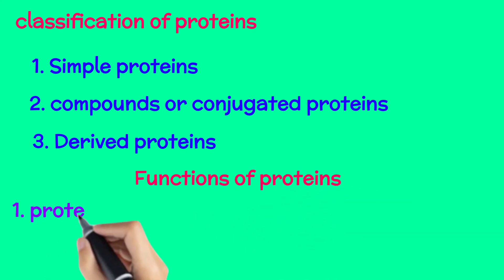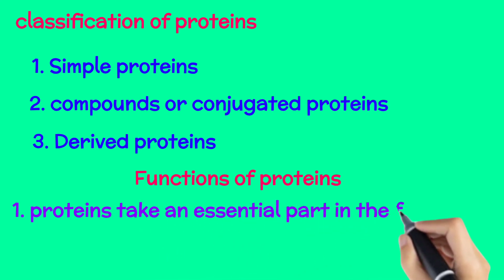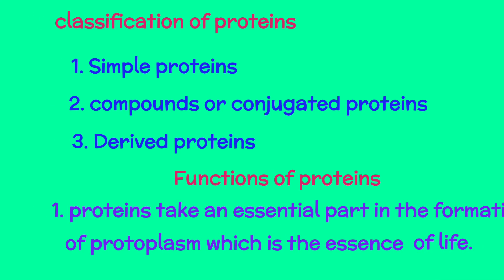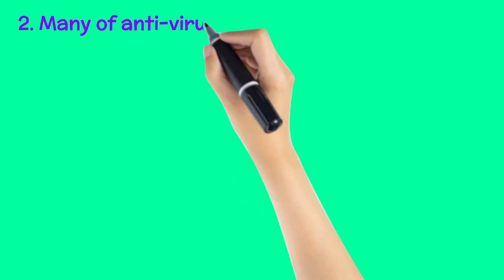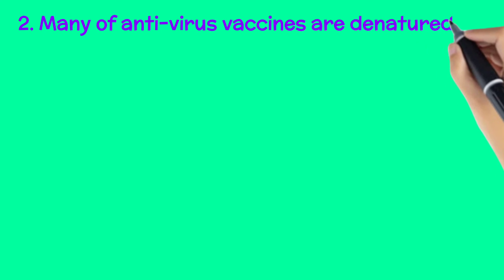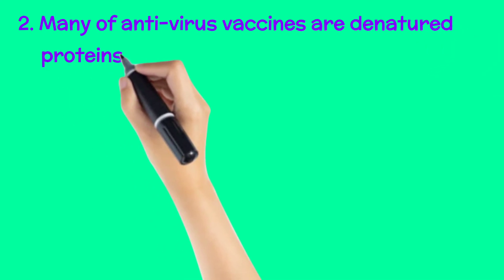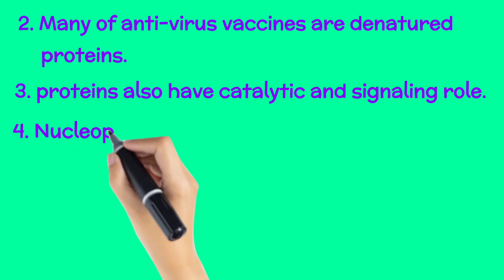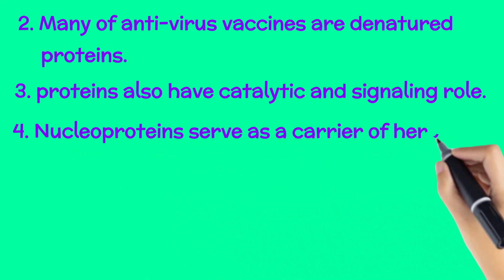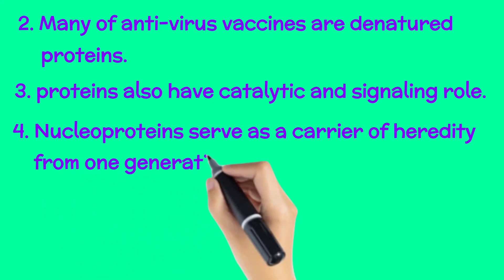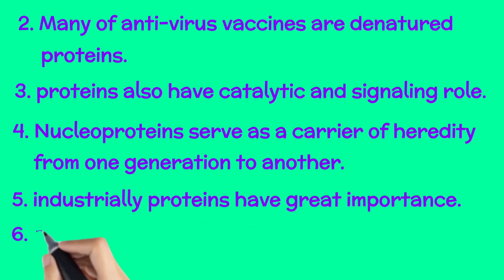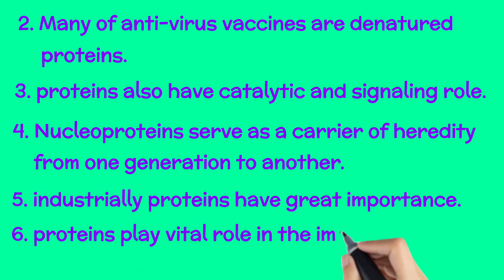And now we come to the functions of proteins. The first function is that proteins are structural components. The second one is that many anti-virus vaccines are denatured proteins. The third one is proteins also have catalytic and signaling role. The fourth one is nucleoproteins serve as a carrier of heredity from one generation to another. And the fifth function is industrially, proteins have great importance.